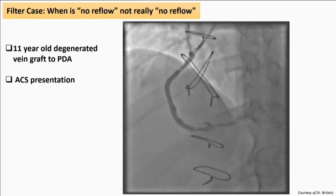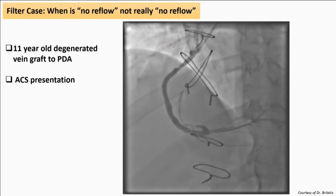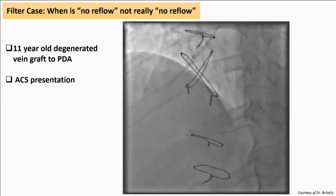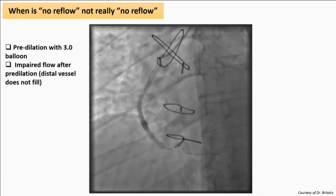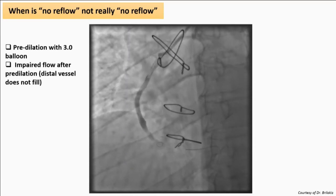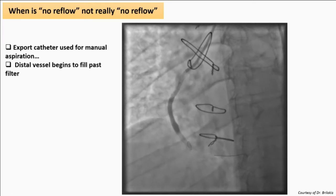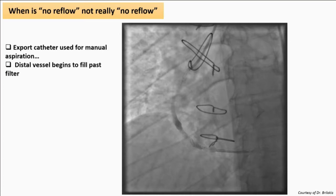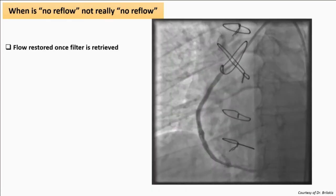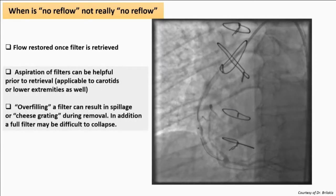Two quick cases to end. If you're doing vein graft cases, you'll use filters. This case, courtesy of Dr. Berlakis, illustrates when no-reflow is really not no-reflow. This is an 11-year-old degenerated graft with an ACS presentation. After predilation, there's interruption of flow. An export catheter is used for aspiration of the filter, and you can see the distal vessel begins to fill past the filter — but there's still impaired flow. Once the filter is retrieved, flow is restored. The mechanism: the filter can get clogged and full, so aspiration of filters can be very helpful.